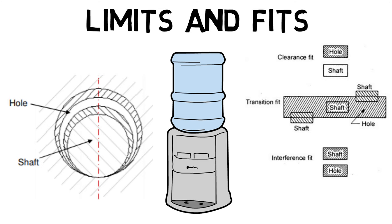A fit that everywhere provides interference between the hole and the shaft when assembled is known as an interference fit. In interference fit, the maximum size of the hole is either small or equal to the minimum size of the shaft. Finally, a fit which may provide either a clearance or an interference fit between the shaft and hole when assembled, depending on the actual size of the manufactured shaft and hole, is known as a transition fit.